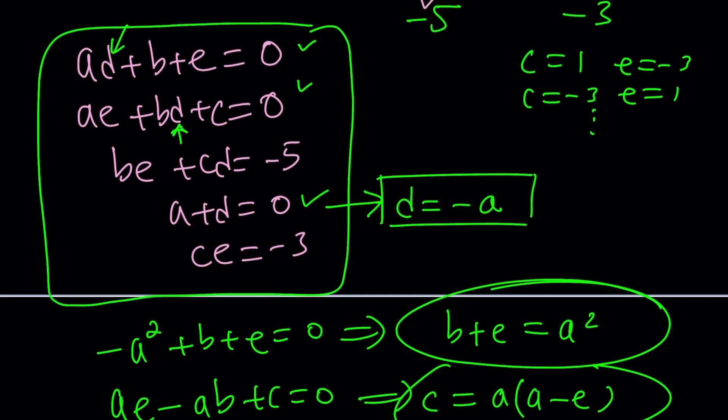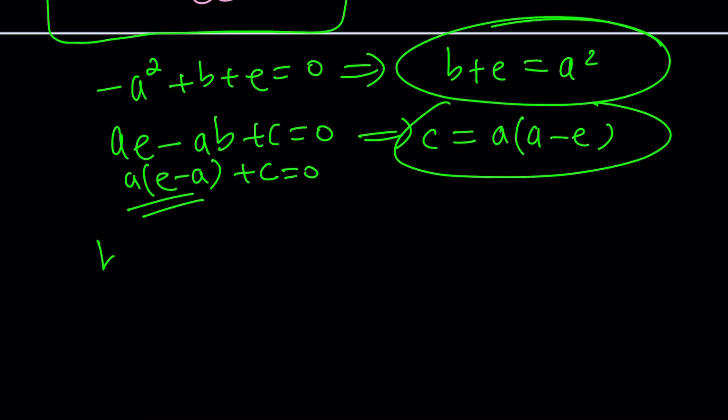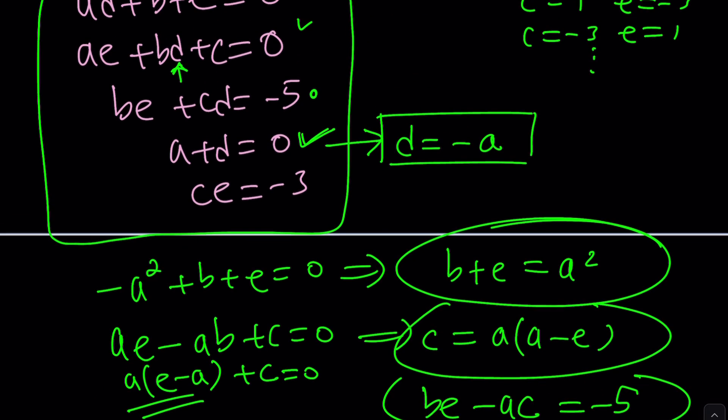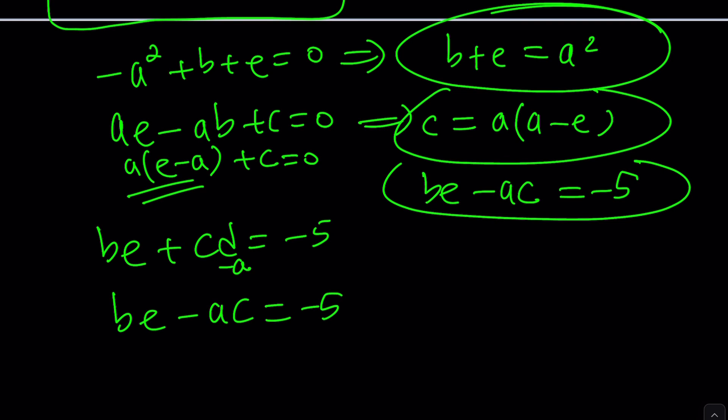And then let's see what else we can do. So we didn't use the second, I mean the third equation. I think we use the first and the second one along with the fourth one. Maybe we can use this one. be plus cd is negative 5. And notice that d can be written as negative a. So this will be be minus ac equals negative 5. I'm going to put that here. And then we have one more equation, which is ce equals negative 3.